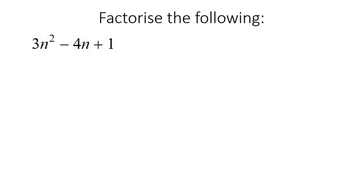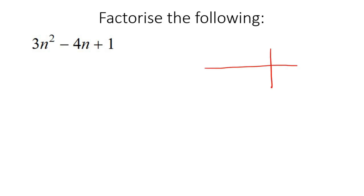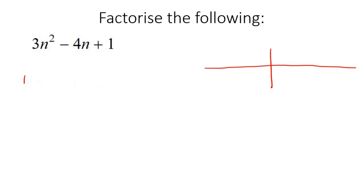Here's our next example. Again, you cannot take out a common factor that goes into 3, 4, and 1. So we use the new technique. Whenever this first number is a 1, you can use the old method, but as soon as we have a number left over in the front after trying common factors, we use this technique. So take the factors of 3: 1 and 3, and also reversed 3 times 1. Then factors of 1: only 1 times 1.